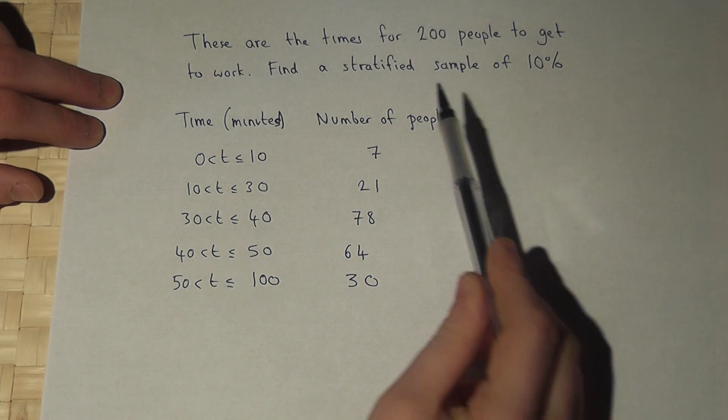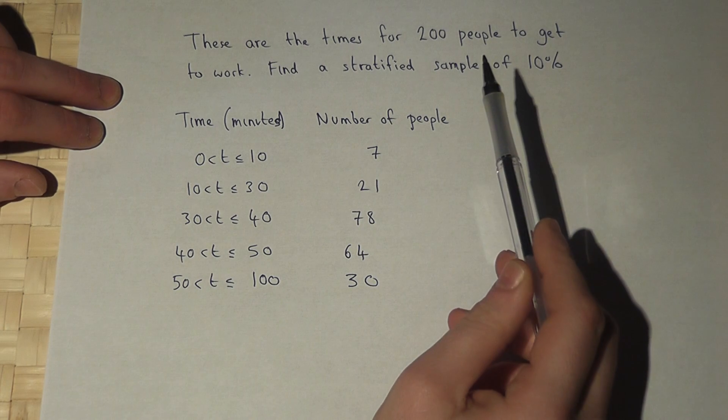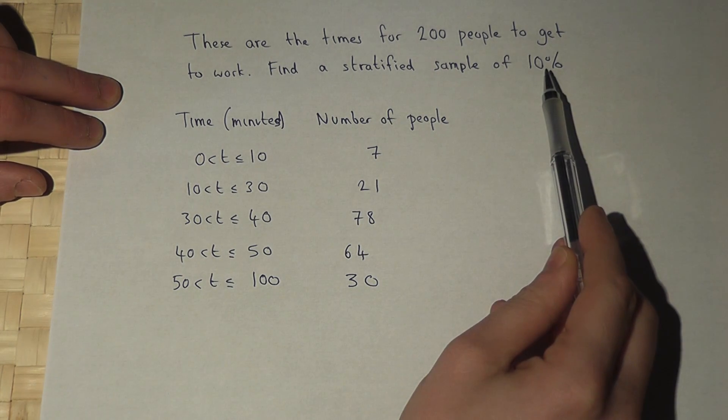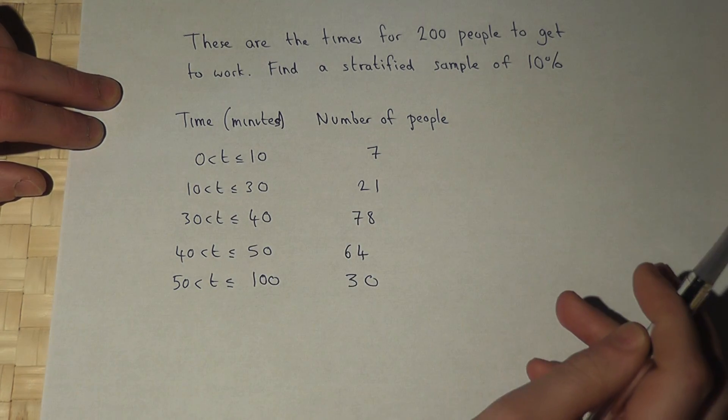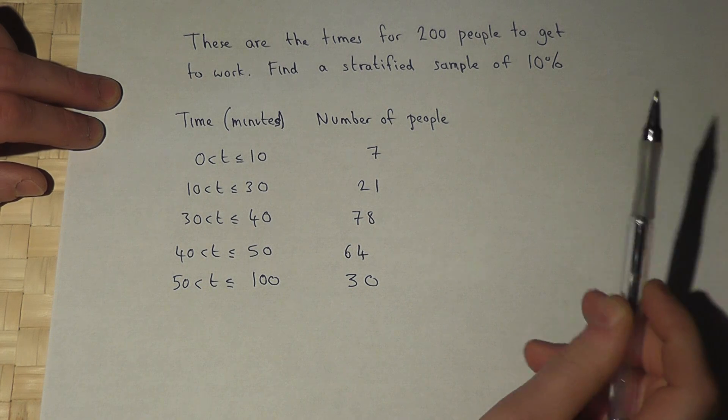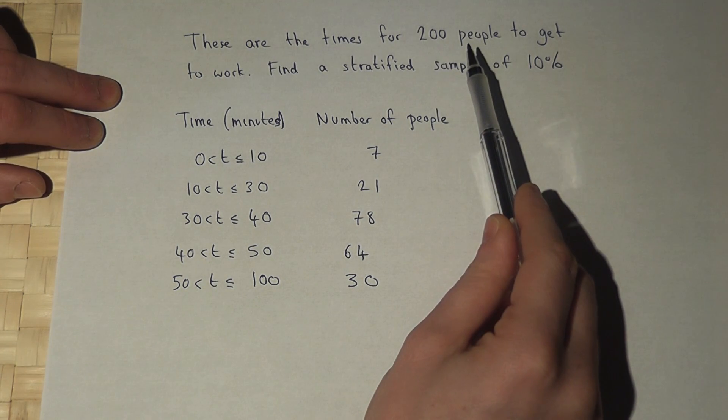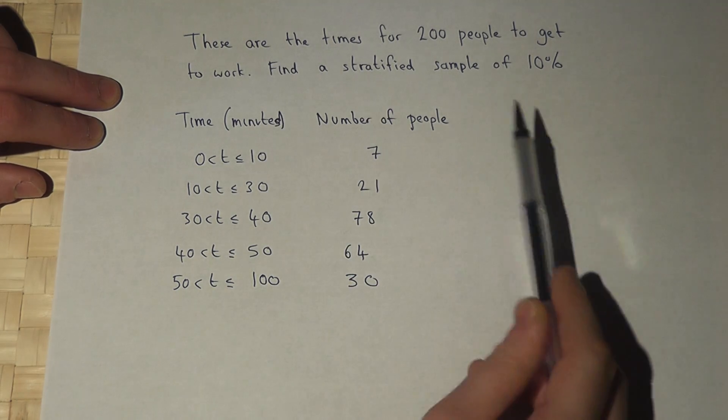This video talks through how to find a stratified sample, in this case of 10%, from a given set of data. We're told this is of 200 people and it's the time that they took to get to work.